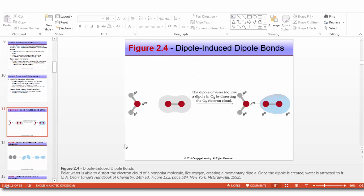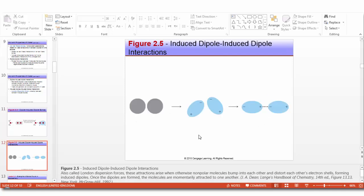In this figure we see the first type called dipole-induced dipole bonds. Polar water is able to distort the electron cloud of the non-polar molecule like oxygen, creating a momentary dipole. Once the dipole is created, water is attracted to it. The other one is called induced dipole-induced dipole, also called London dispersion forces. These attractions arise when otherwise non-polar molecules bump into each other. Two non-polar molecules bump into each other and distort each other's electron shells forming induced dipoles. Once the dipoles are formed, the molecules are momentarily attracted to each other.